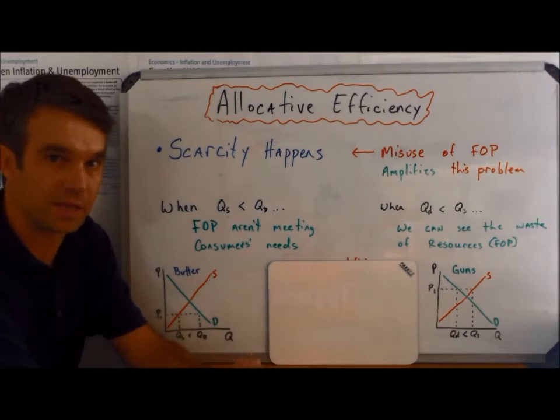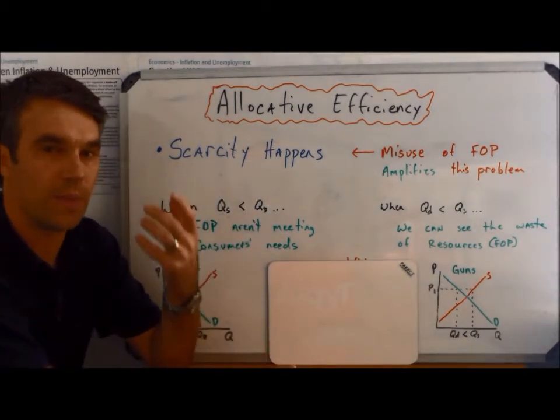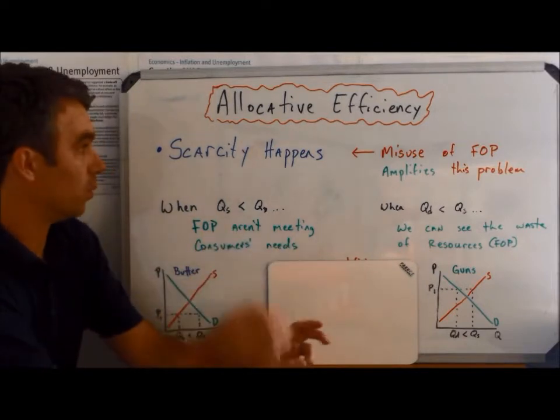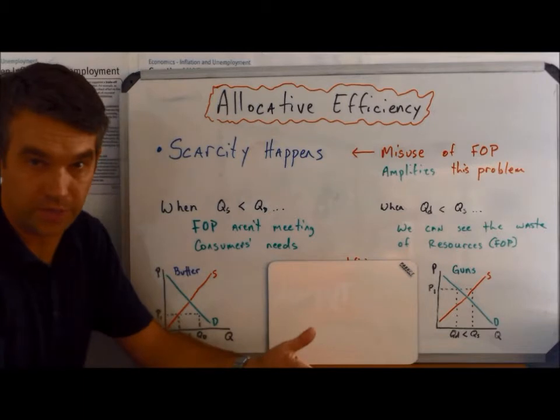One of our big topics in economics is the search for allocative efficiency. If we go back to our original economic problem, which is that there's always going to be scarcity and you can't avoid that.